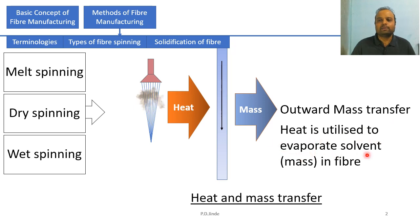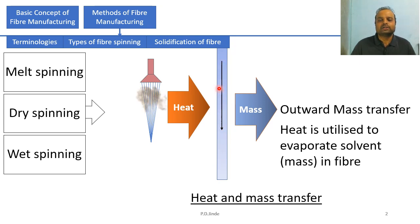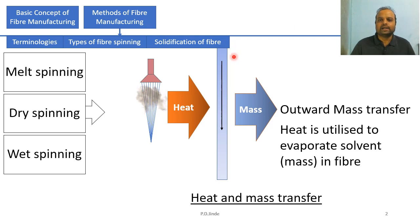The heat applied across the filament heats it to a temperature at which the solvent evaporates into the atmosphere — this is called outward mass transfer. The filament then solidifies quickly. In conclusion, solidification of a fiber in dry spinning takes place by both heat transfer and mass transfer.